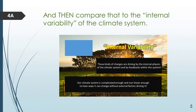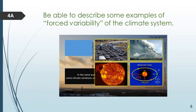Examples of forced variability are things like changes in the Earth's orbit, volcanic eruptions, changes in solar output, or from an anthropogenic point of view, things like the addition of greenhouse gases. None of these things are caused by the climate system. They are external processes that drive the climate system. No matter what the climate system is doing, that doesn't change the orbit of the Earth — the orbit of the Earth changes the climate system.